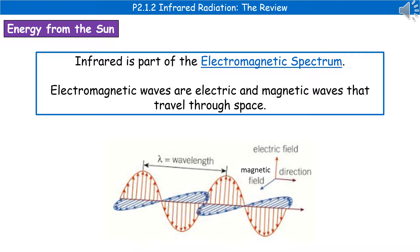Welcome to our review on infrared radiation. When we're talking about infrared radiation, we're talking about parts of the electromagnetic spectrum, and we're going to find out a lot more about that throughout the physics course. When we are talking about an electromagnetic wave, these are waves that are electric and magnetic waves that are able to travel through space.